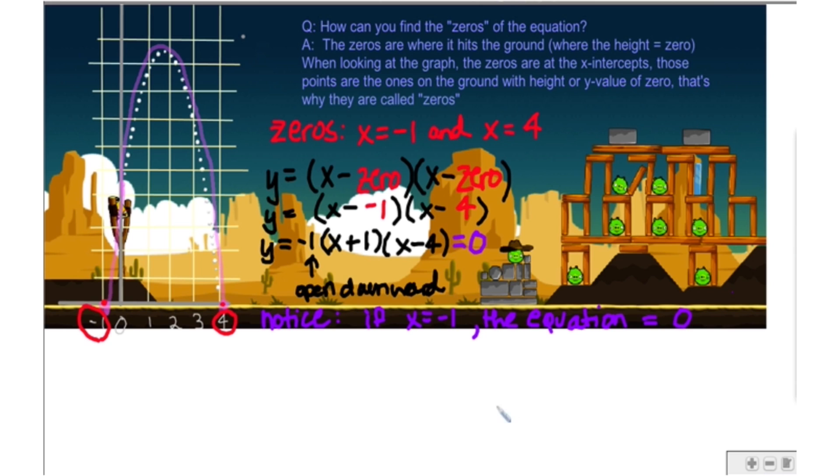So notice if x equals negative 1, the equation equals zero. And that's what we want. When we want to solve a quadratic equation, we want to find the x values that make the quadratic equation equal to zero. So let's go ahead and plug in. We go back to our equation: y equals negative 1 times, if you let x equals negative 1, which is our zero, so we're going to plug in right here: let x equal negative 1 plus 1.